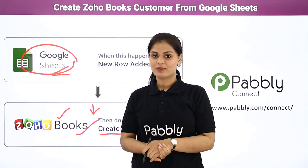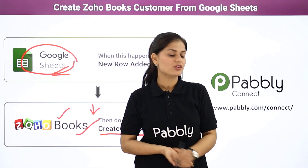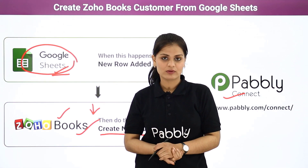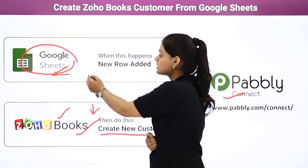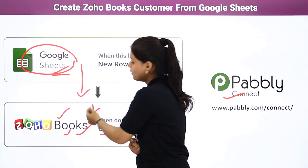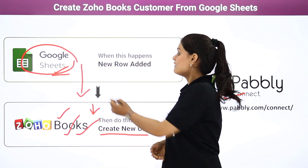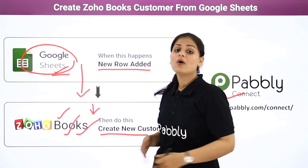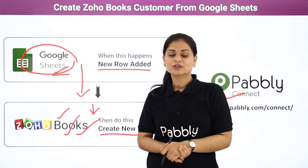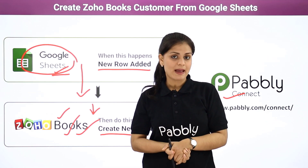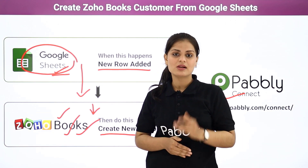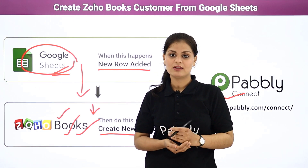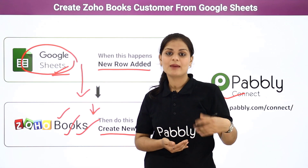Here I would suggest you to bring in some automation. In this video, I am going to use Pabbly Connect. Pabbly Connect is a third-party automation and integration software which will help to transfer the data of Google Sheets into Zoho Books. Whenever a new row is added into my Google Sheets, a customer will be created automatically into my Zoho Books account. The best part of using Pabbly Connect is you do not need to have coding skills and programming knowledge. It is actually very easy to use.